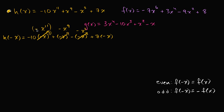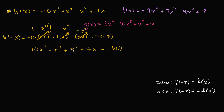Negative 10 times the negative of x to the 11th — a negative times a negative is positive — so this is positive 10x to the 11th power. Then minus x to the 9th power. Then you subtract a negative x to the 3rd, so that's a positive x to the 3rd. And then this is minus 7x. Notice what we have here is the same as h of x but with all the signs different — it's the same as negative h of x. So h of negative x equals negative h of x, and h of x is an odd function.